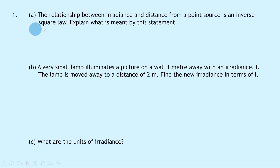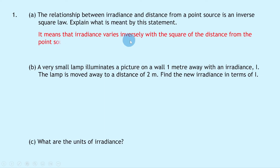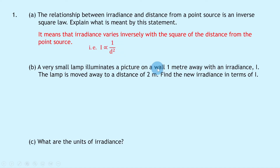Question 1a says: the relationship between irradiance and distance from a point source is an inverse square law — explain what is meant by this statement. We can say it means that irradiance varies inversely with the square of the distance from the point source, or in symbol form, I is directly proportional to 1 over d squared.